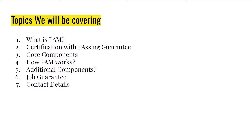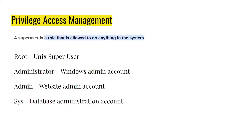Fifth, additional components — in addition to the four core components, there are optional components available depending on the company's budget and requirements. Sixth, job opportunities — whether jobs are available in this technology. And seventh, contact details if you want to reach us for certification, a course, or the job guarantee program.